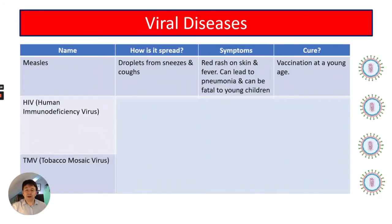Looking at viral diseases: measles is spread through droplets from sneezes and coughs. Symptoms are a red rash on the skin and fever. It can lead to pneumonia and can be fatal to young children. The prevention is vaccination at a young age.